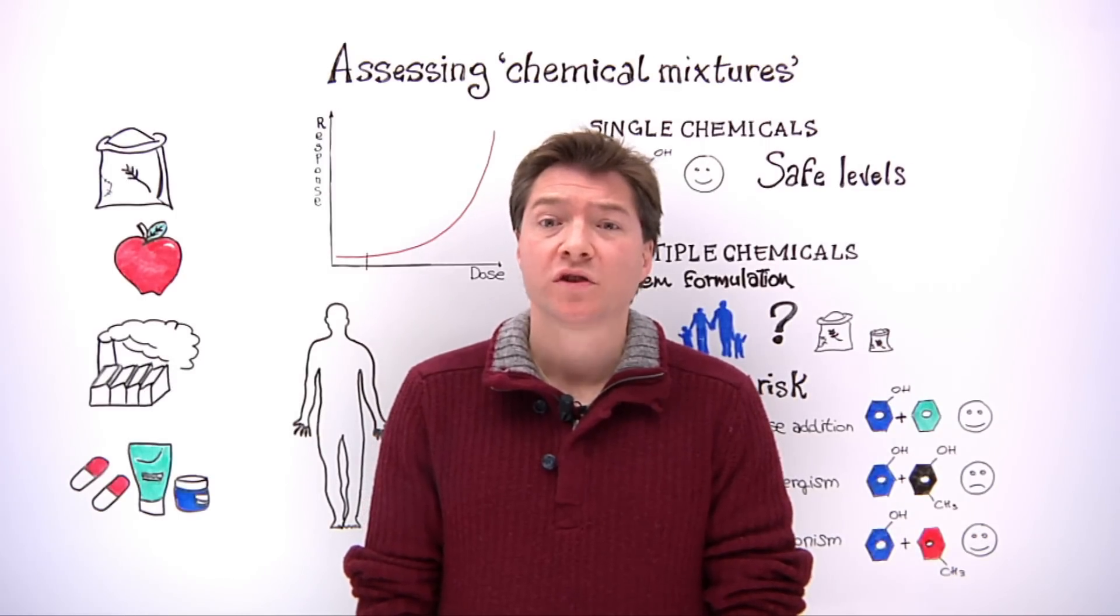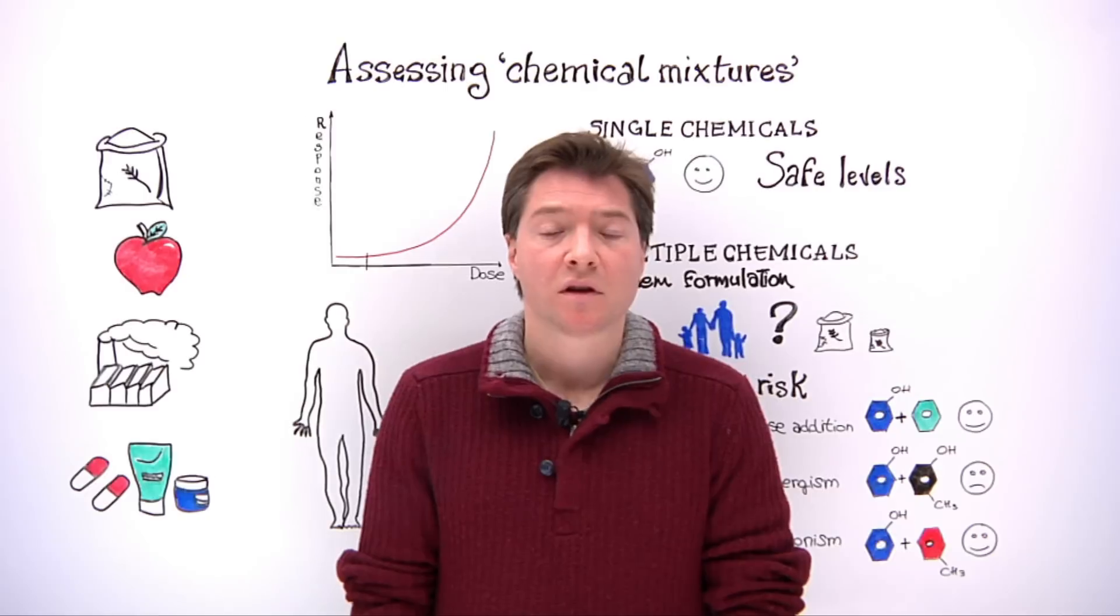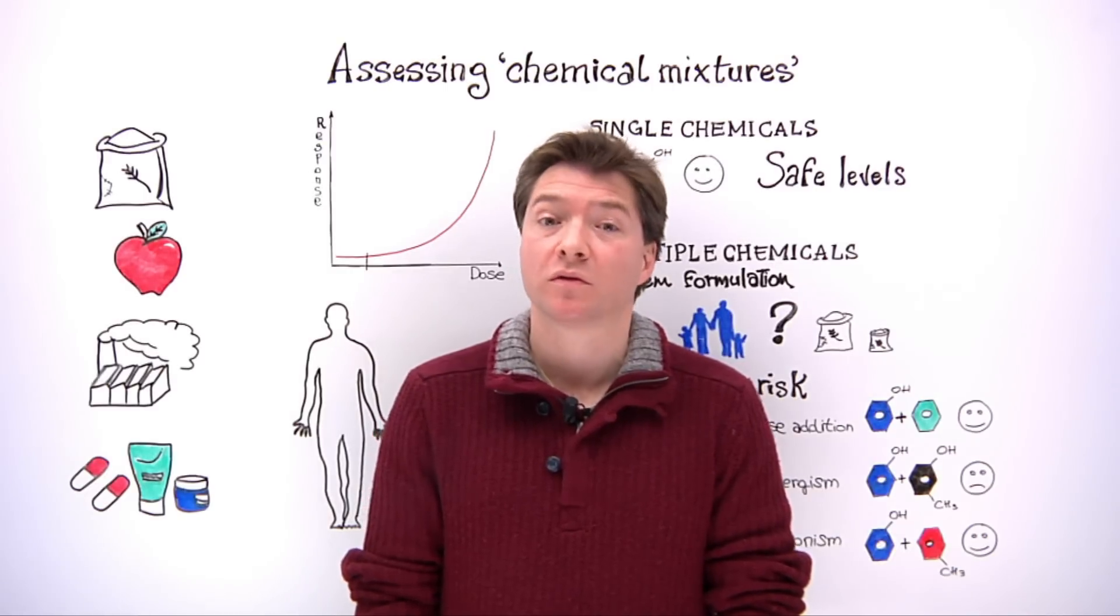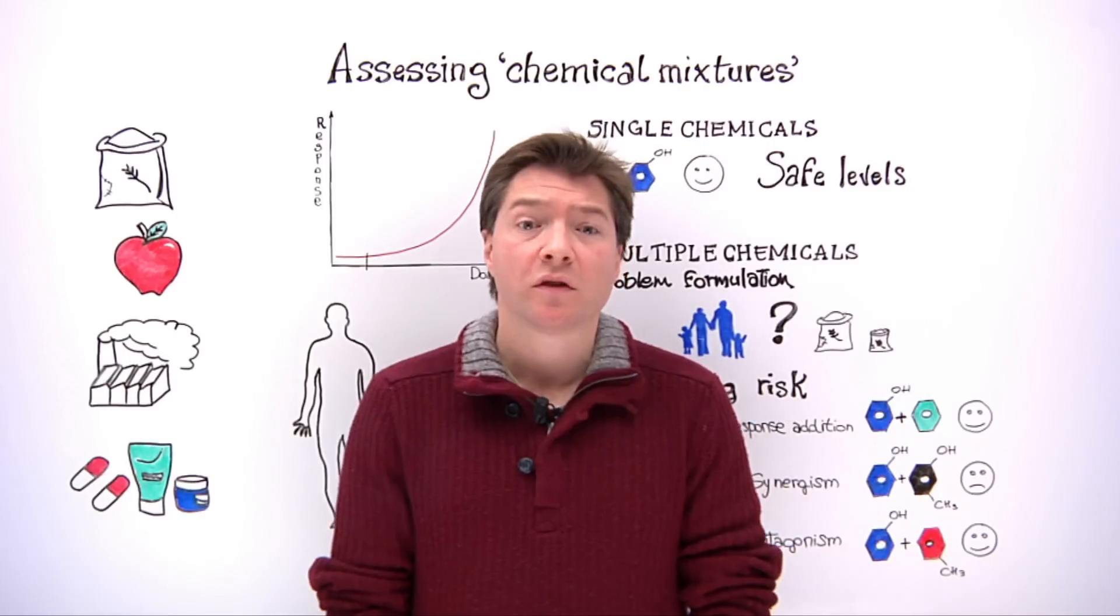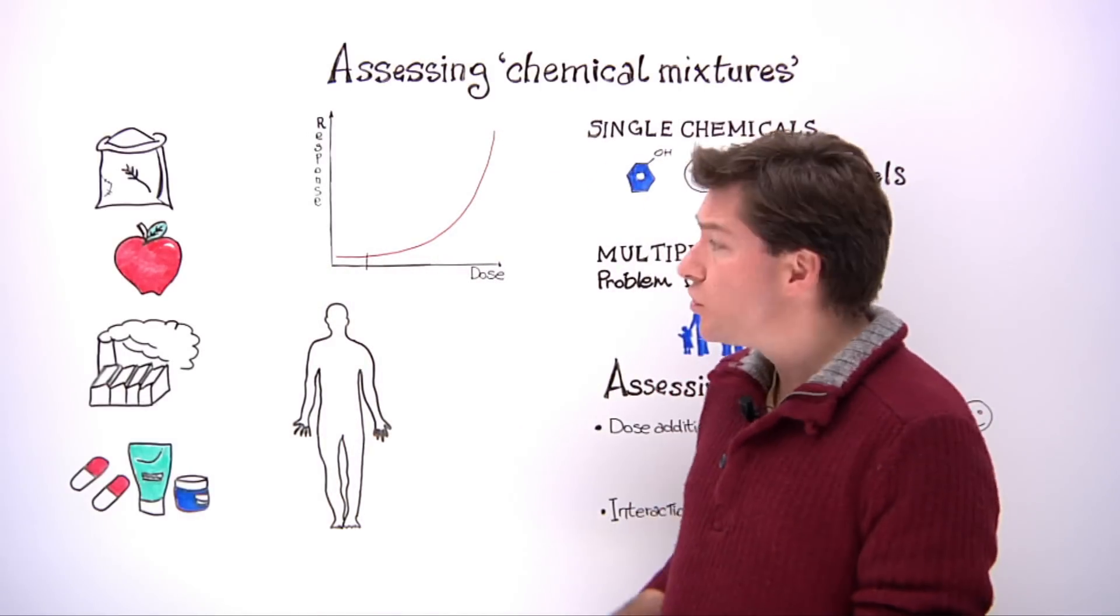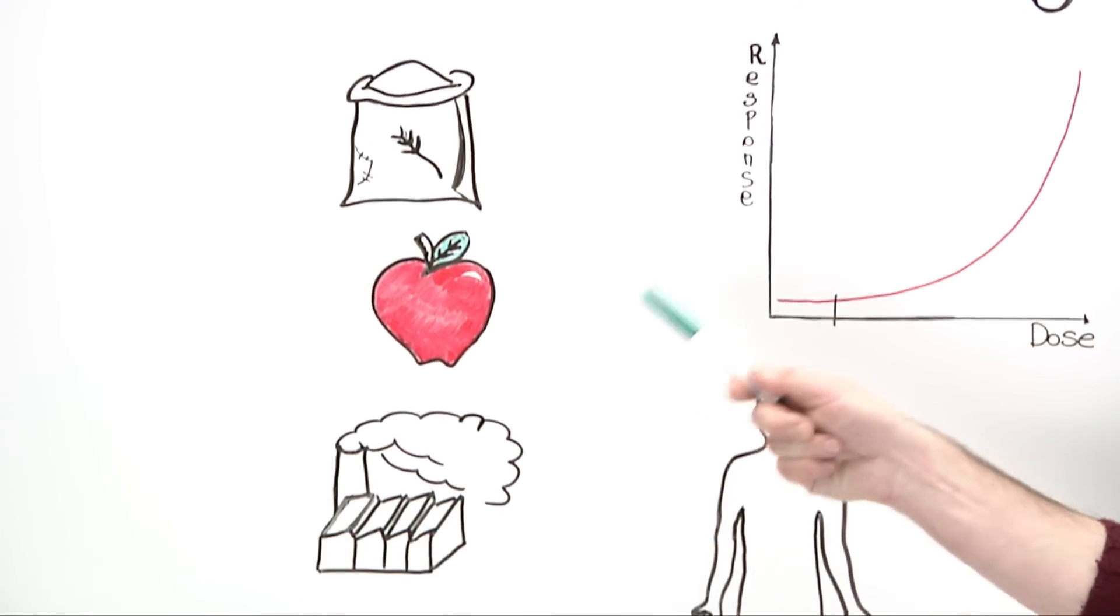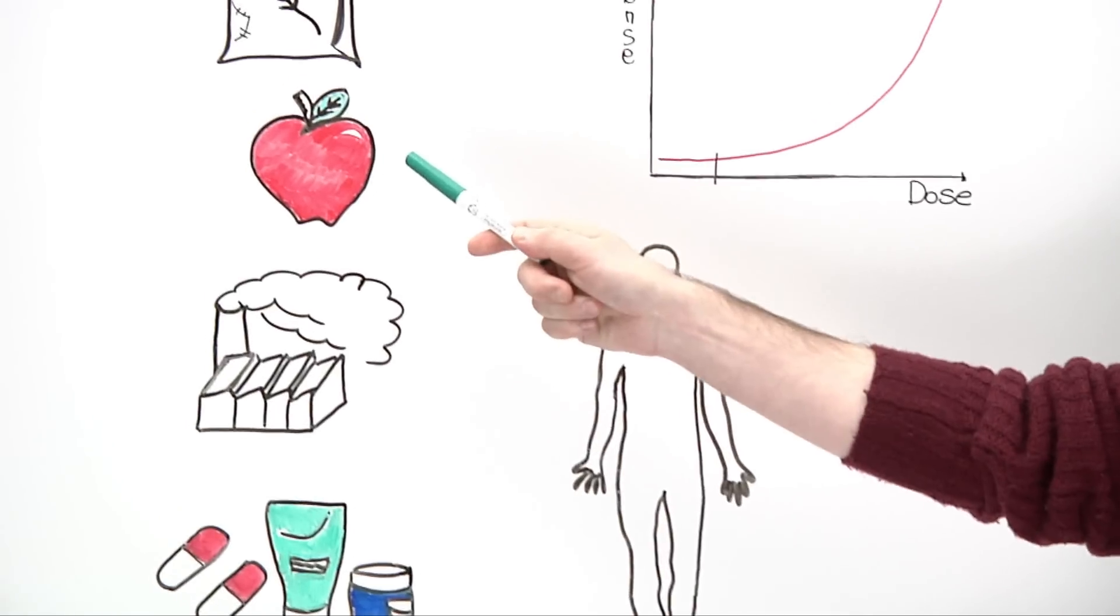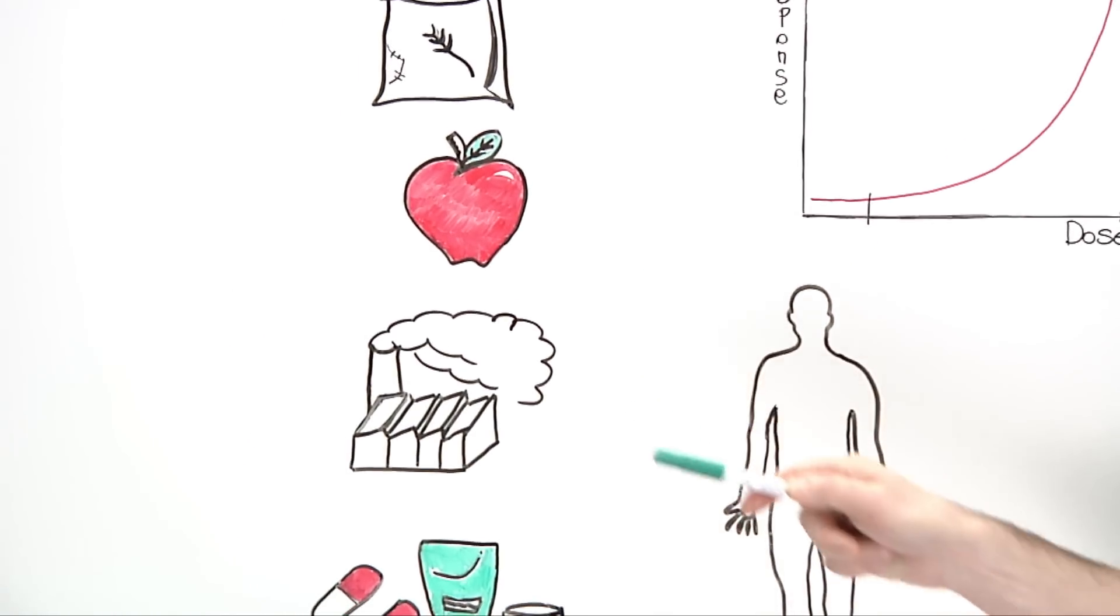First of all, what do we mean by chemical mixtures? Chemical mixtures refer to combined exposure to multiple chemicals. Foods may contain many different chemicals naturally occurring, such as nutrients and plant toxins produced by weeds, or man-made chemicals such as pesticides and environmental contaminants such as dioxins.